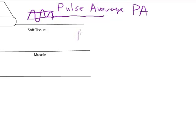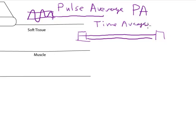Since this is on only maybe less than 1% of the time, you could also look at the average intensity over the total time in between pulses. And that's called the time average intensity, or TA.